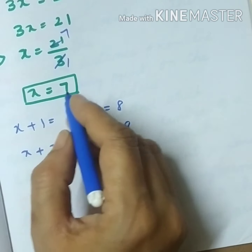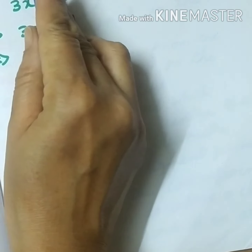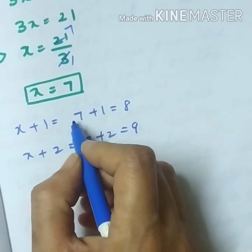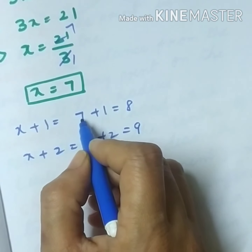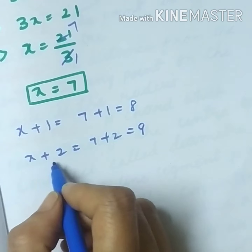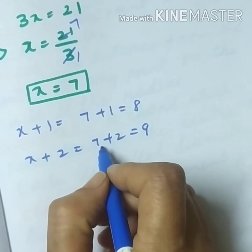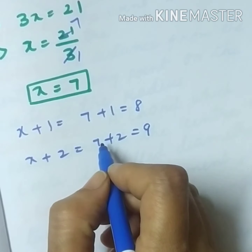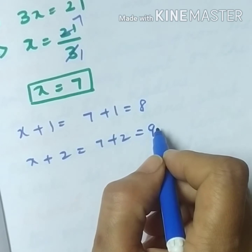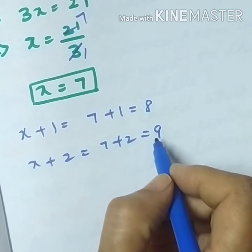We got x equal to 7. Now we have to find x, x plus 1, and x plus 2. Substituting x equals 7: x plus 1 means 7 plus 1 equals 8, and x plus 2 means 7 plus 2 equals 9. So the three consecutive numbers are 7, 8, and 9.